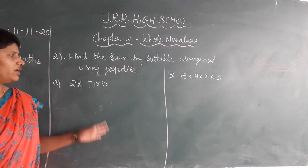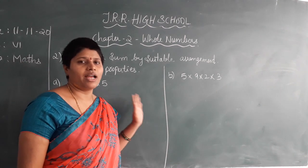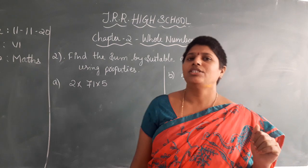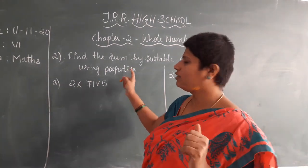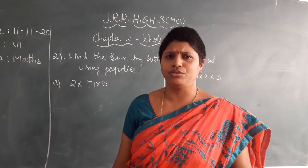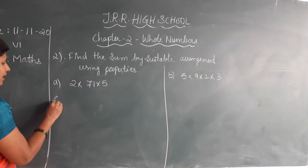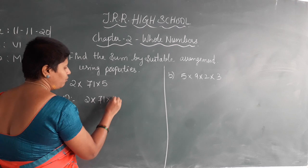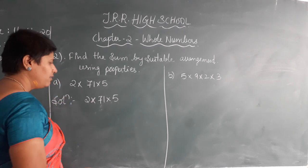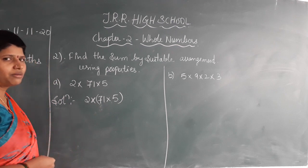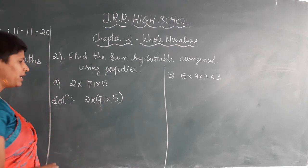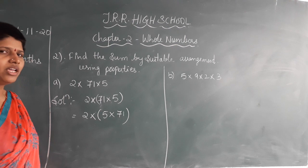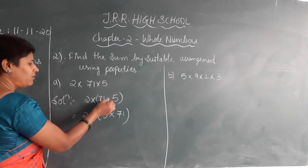This is one more type of problem. The first one we have seen with respect to addition — adding 3 or 4 numbers using properties. This is real multiplication. How to multiply using your properties — same method you have to use. For addition we used the same two properties; for multiplication we have to use them too. Now: 2 into 71 into 5. Take the last two numbers in the brackets, interchange these two numbers.